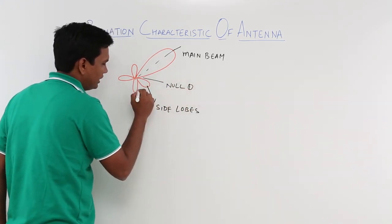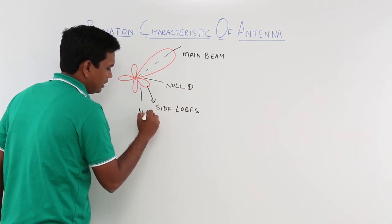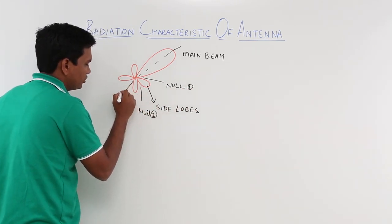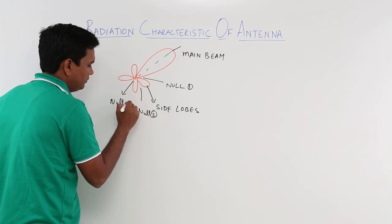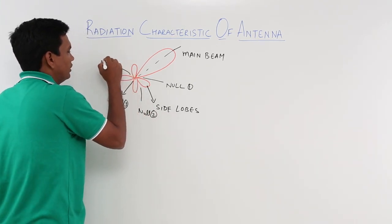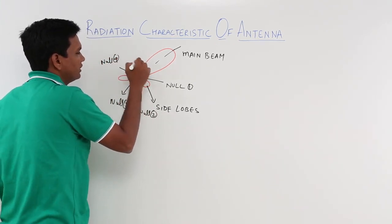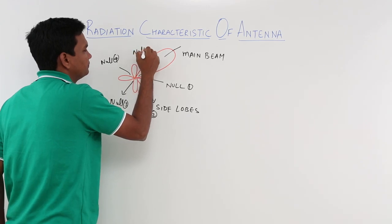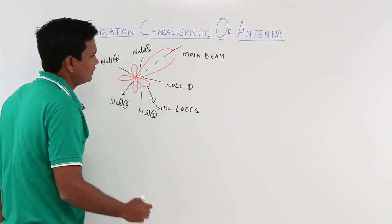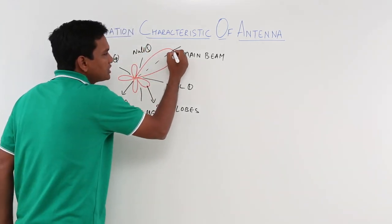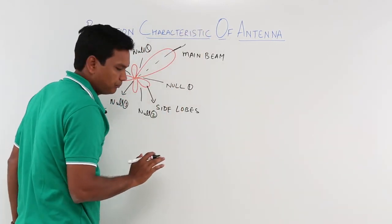This is null 1, this is null 2, this is null 3, this is null 4, and this is null 5. The antenna is transmitting the maximum power in the main beam direction.